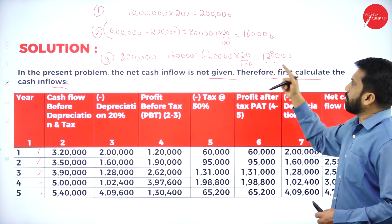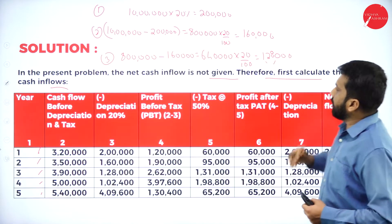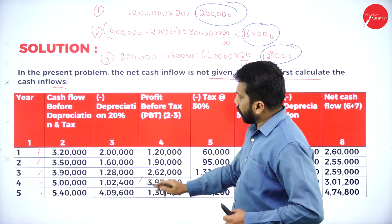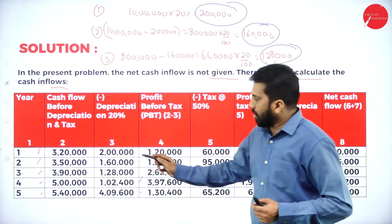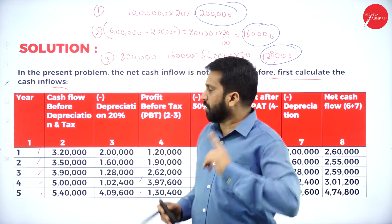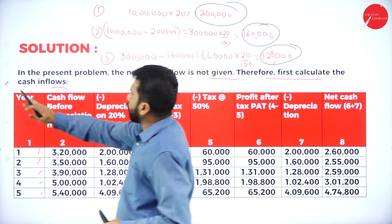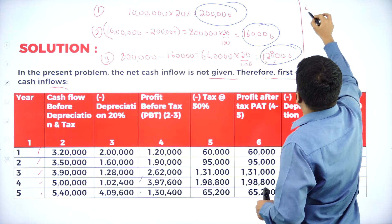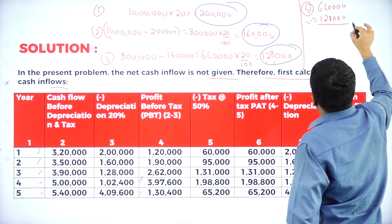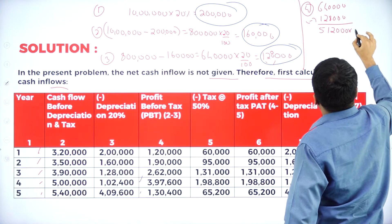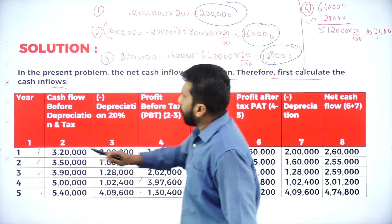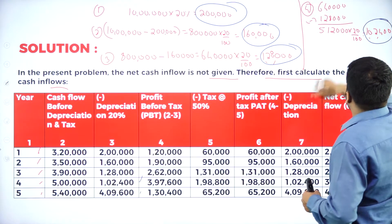Depreciation summary so far: Year 1 = 2 lakh, Year 2 = 1 lakh 60 thousand, Year 3 = 1 lakh 28 thousand. For Year 4: take 6 lakh 40 thousand minus 1 lakh 28 thousand = 5 lakh 12 thousand; 5 lakh 12 thousand at 20 percent = 1 lakh 2 thousand 400. So Year 4 depreciation = 1 lakh 2 thousand 400.